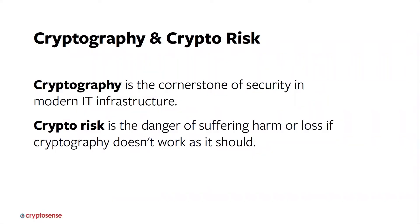Cryptography is the cornerstone of security in IT infrastructure everywhere. These days we're always encrypting data, authenticating people with cryptographic operations like signatures, and using hash functions everywhere — for authentication with HMAC, to compress documents we want to sign. Cryptography is really everywhere in modern IT, whether it's on-prem, in the cloud, or in the internet of things. Cryptography risk is the danger of something bad happening if the cryptography doesn't work as it should.